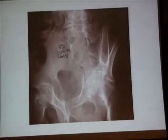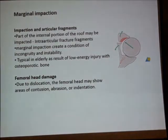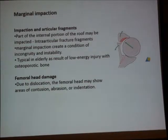On the obturator view of the anterior wall fracture, we can see the roof arc line is no longer congruent and there is instability of the injury. It is very important not only to assess the stability and displacement of the femoral head, but also the marginal impaction.